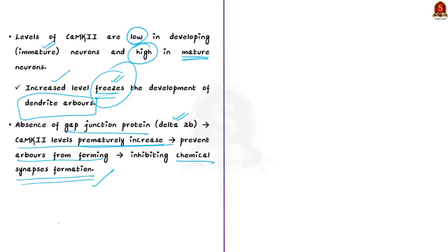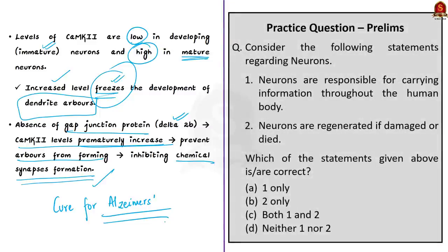This research is significant because it unravels the complex mechanisms of the human brain and its coordination mechanisms. This particular research contributes knowledge that will help enormously in scientific breakthroughs, such as finding a cure for Alzheimer's disease. In summary, we saw what neurons and synapses are and why they are important, the difference between chemical and electrical synapses, that electrical synapses are formed before chemical ones, and how removal of gap junction delta-2b protein affects enzyme CAMK2, which in turn affects the formation of chemical synapses.